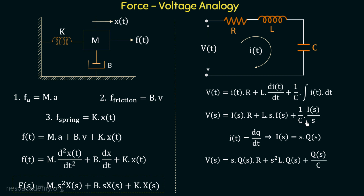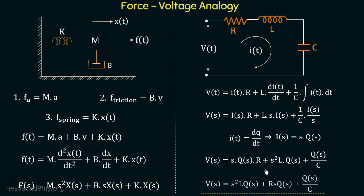In this modified equation, I(s) has been replaced with s·Q(s) in each term. Rearranging, we have: V(s) = s²·L·Q(s) + R·s·Q(s) + Q(s)/C. Now we can compare the equilibrium equation of the electrical network with the equilibrium equation of the mechanical system.